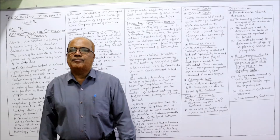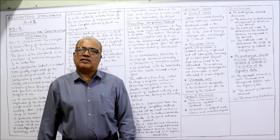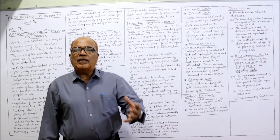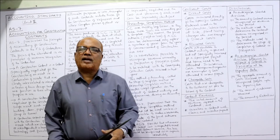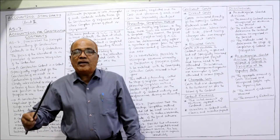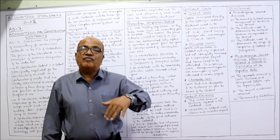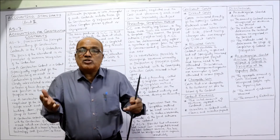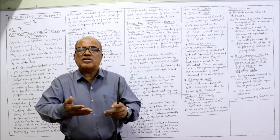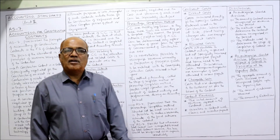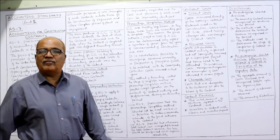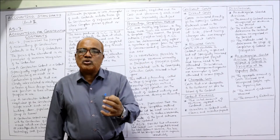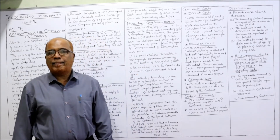Contractor revenue comprises: first, the initial amount of revenue agreed in the contract — for example, 50 lakh rupees agreed between contractor and contractee for constructing a building. Second, variations in contract work, claims, and incentive payments — amounts arising from changes in specification, extra work claims, or incentive payments received from the contractee. All these form part of the contractor's revenue.